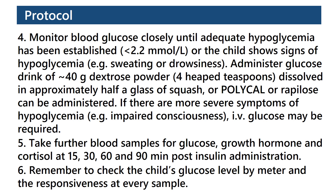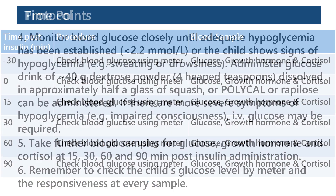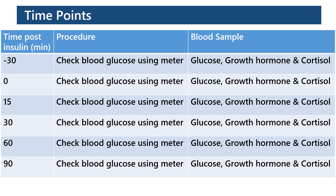Administer a glucose drink of 40 grams of dextrose powder dissolved in approximately half a glass of squash; polycal or epilose can also be administered. If there are more severe symptoms of hypoglycemia like impaired consciousness, IV glucose may be required. Take further blood samples for glucose, growth hormone and cortisol at 15, 30, 60 and 90 minutes post insulin administration. Remember to check the child's glucose level by meter and responsiveness at every sample.